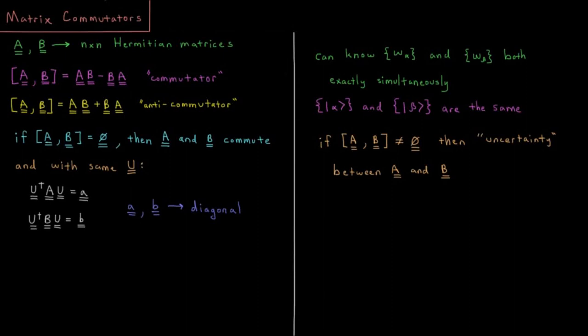This video will discuss the commutators of matrices and some interesting properties that occur when matrices commute. So let's say we have, as we have in much of this chapter, two matrices A and B.